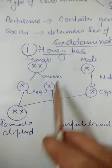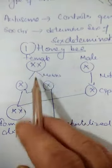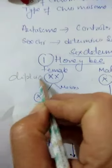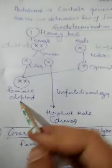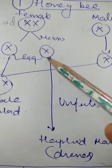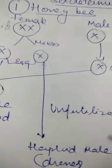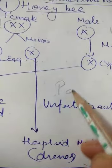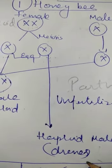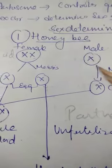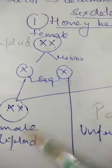The female is diploid and undergoes meiosis to form eggs, while the haploid male undergoes mitosis to form sperm. When an egg fertilizes with an X-bearing sperm, a diploid XX female is formed. However, some X-bearing eggs remain unfertilized and undergo parthenogenesis, forming haploid male organisms called drones. So in honey bees, females are diploid and males are haploid.